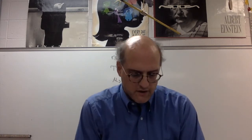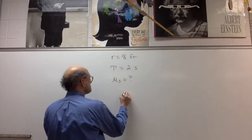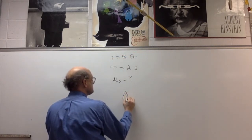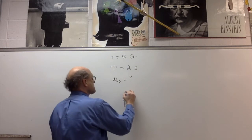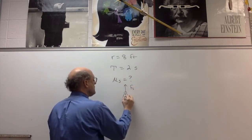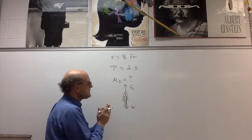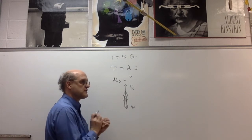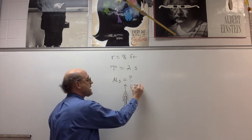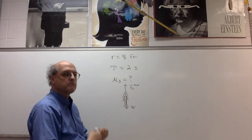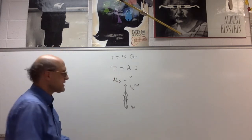We're looking for the coefficient of static friction. I'm going to draw a free body diagram. Here's a rider on the wall. There has to be a force of static friction upward which is equal to the rider's weight downward. Since it's a minimum coefficient of static friction, that means this person is on the verge of slipping — so this is the maximum force of static friction, just on the verge of breaking away.